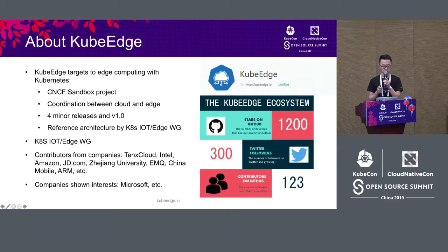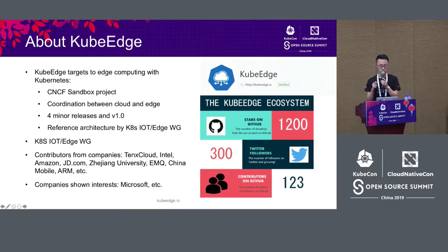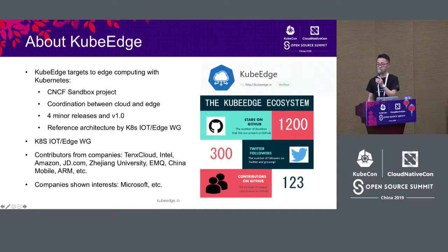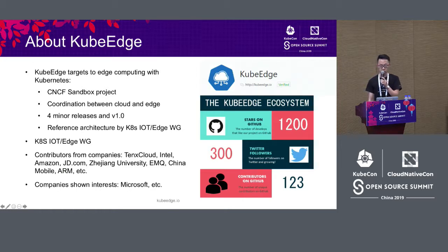The main feature is to achieve synergy between cloud and edge. Our main idea is that edge is an extension of cloud. A lot of vendors already have existing and strong services on cloud, so if you connect the cloud and the edge, you can use many cloud products. Yesterday we released the KubeEdge 1.0 version, and we already had four minor releases.